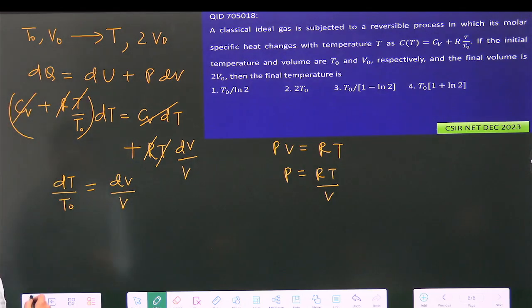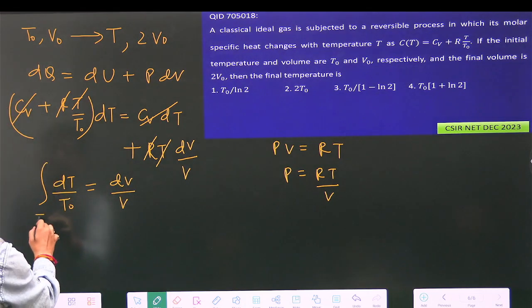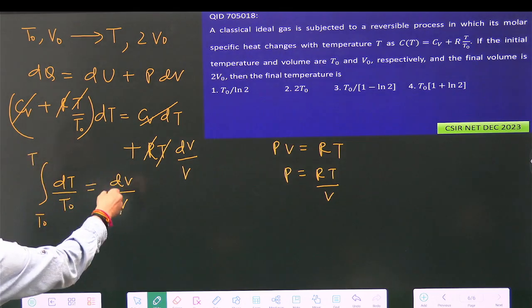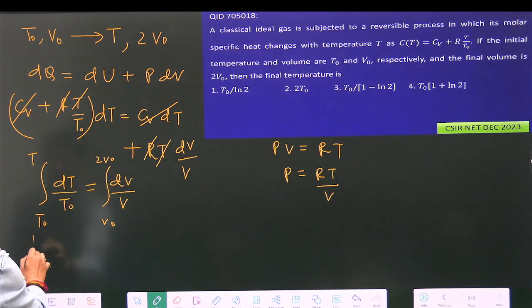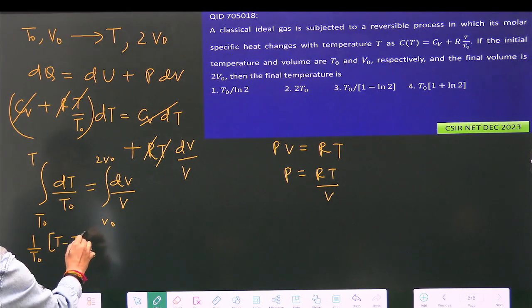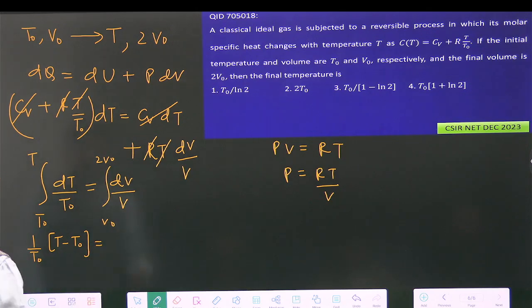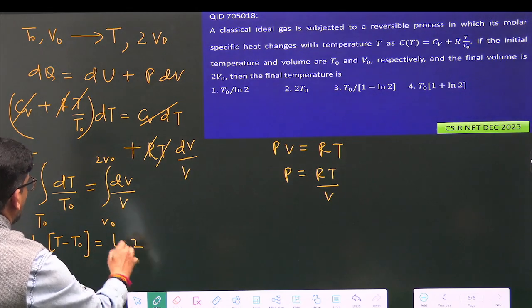Now just integrate it from T₀ to T and integrate it from V₀ to 2V₀. This will become (1/T₀)(T - T₀) equals log 2V₀ minus log V₀, which is log 2.